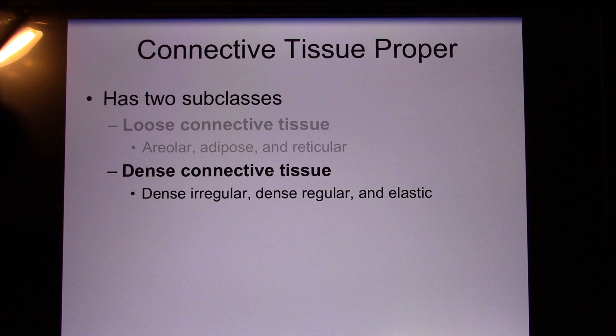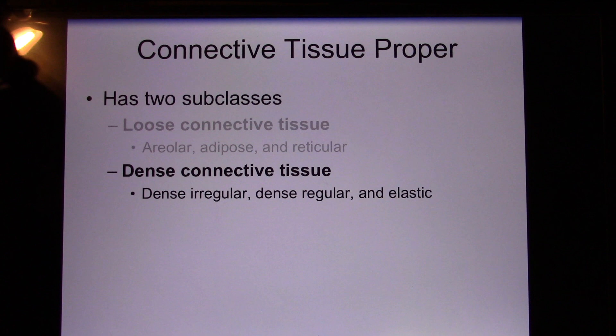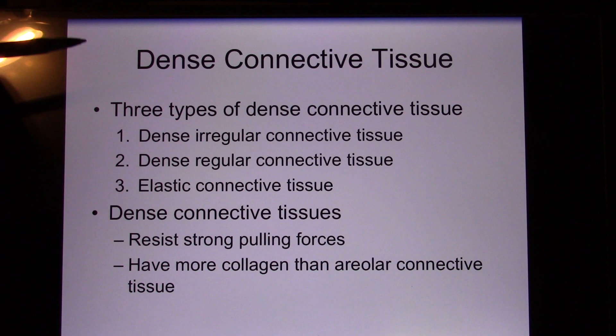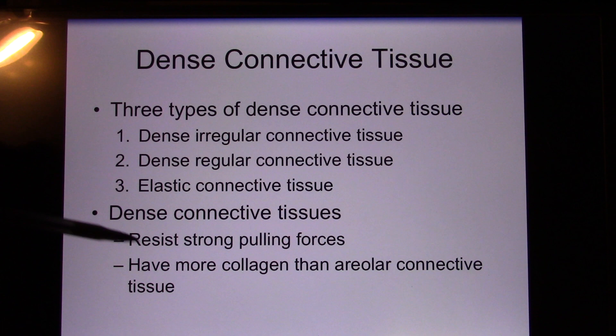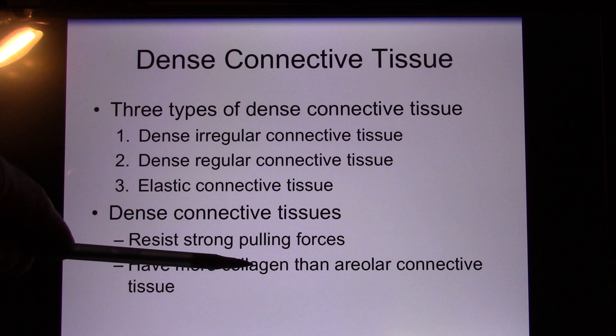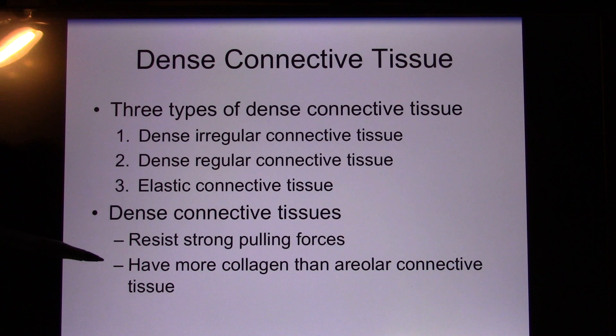Now let's look at dense connective tissue. You have dense irregular, dense regular, and elastic. These tissues are called dense because they apparently have more fiber, so they're stronger and designed to do serious jobs. They can take a lot of abuse — like collagen, rubber bands, or duct tape surrounding muscle to the bones. All these are dense connective tissue.